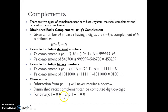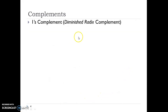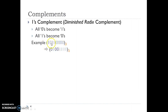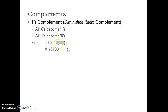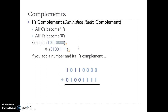For binary, 1 minus 0 gives 1 and 1 minus 1 gives 0. So here are some examples in the binary number system. To find the R-1's complement, or diminished radix complement — called 1's complement in binary — all 0's become 1 and all 1's become 0. We just have to invert all the bits. So if the example is 1011 followed by four 0's, to find the diminished radix complement we simply invert all the bits and we get the 1's complement of that number.